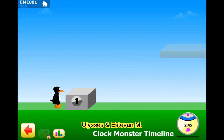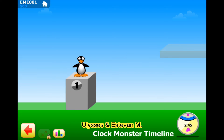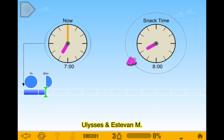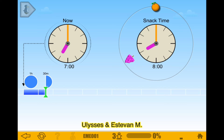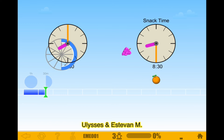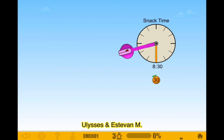Okay, puzzle 1, Clock Monster Timeline, Level 1. Now it's snack time. I have to move this. So it was 7 o'clock and then you move 1 hour and 30. I went to 8 o'clock and I think it's going to say 30 minutes. So I'm just going to click this. This is going to be 1:30. Yep, that's correct.